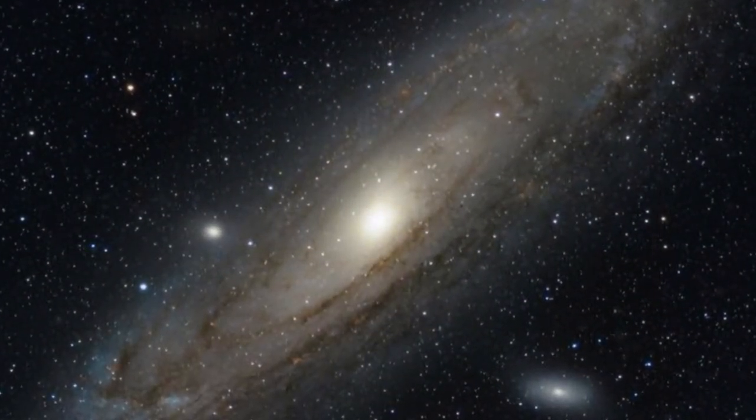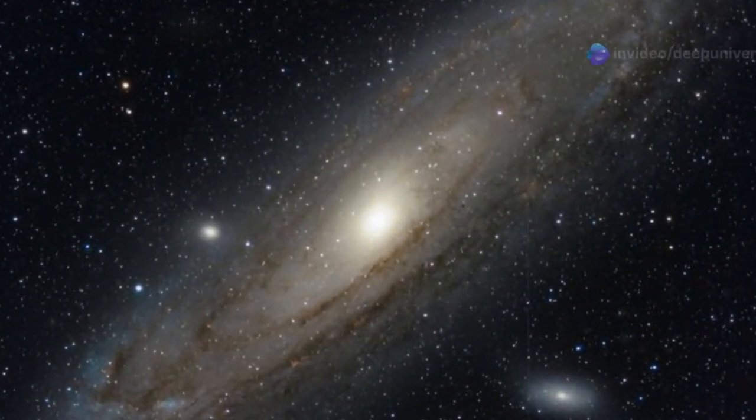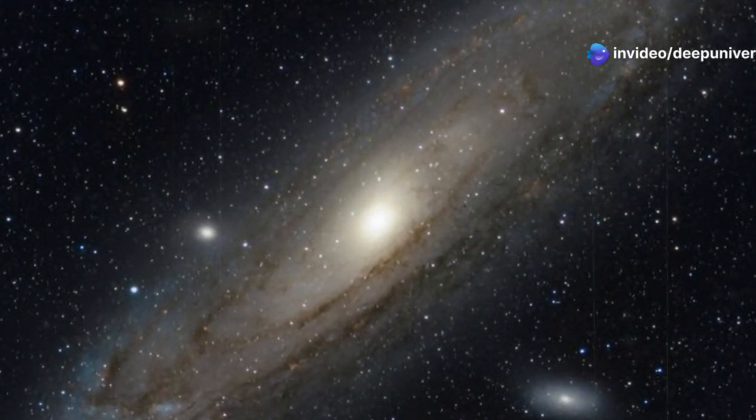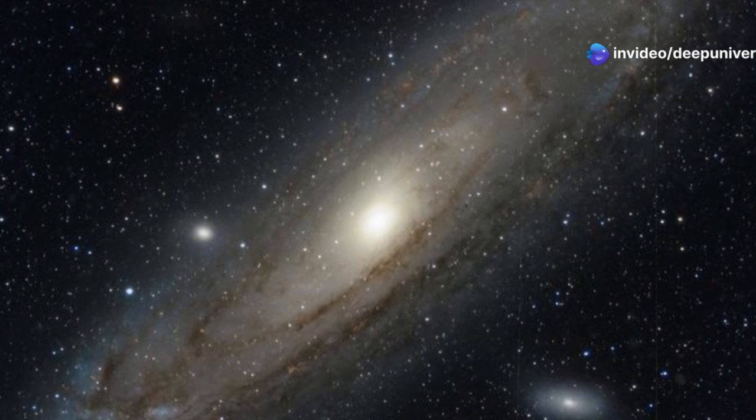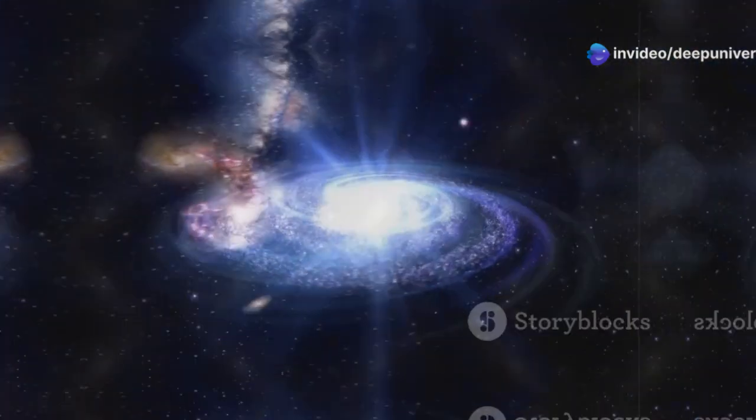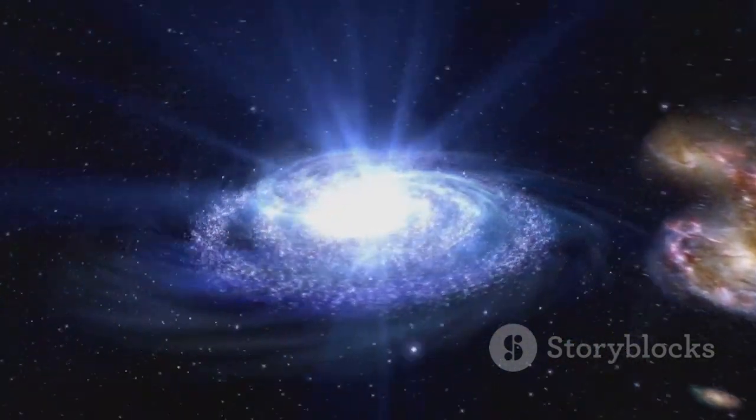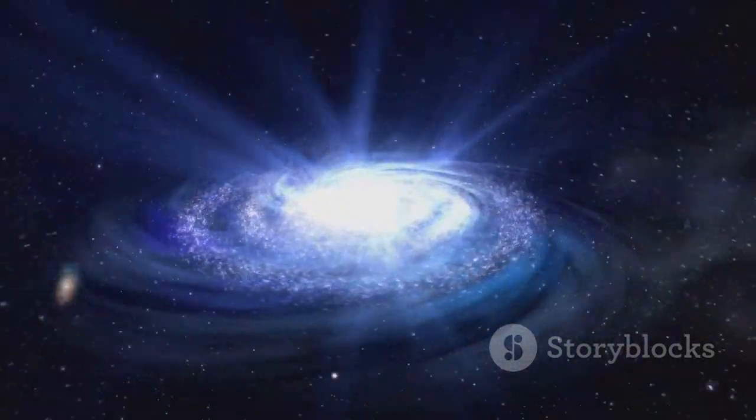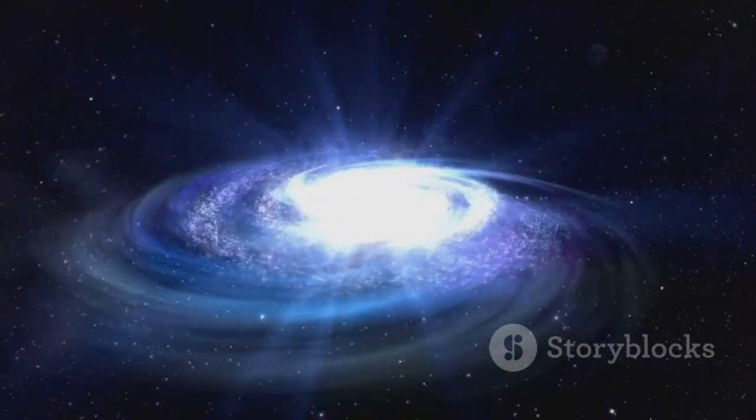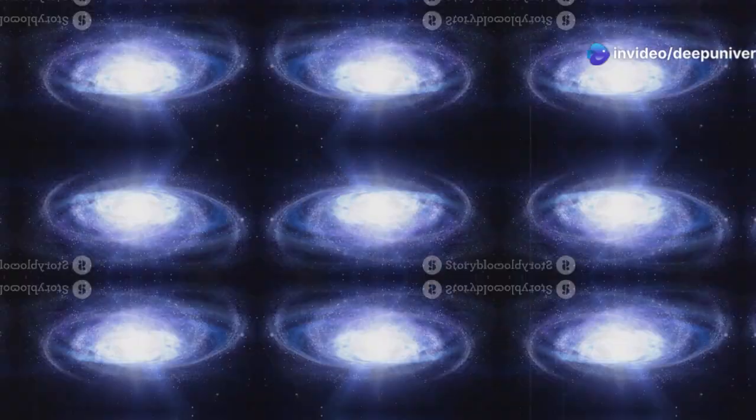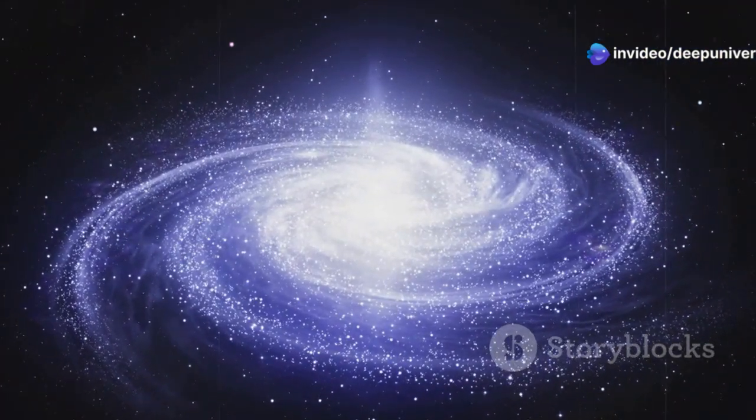Like our Milky Way, Andromeda is a barred spiral galaxy. This type of galaxy is characterized by a central bar-shaped structure and spiral arms that extend outward. This means that it has a central bar-shaped structure composed of stars. The bar is a significant feature influencing the motion of stars and gas within the galaxy. Spiral arms extend outward from the ends of this bar.